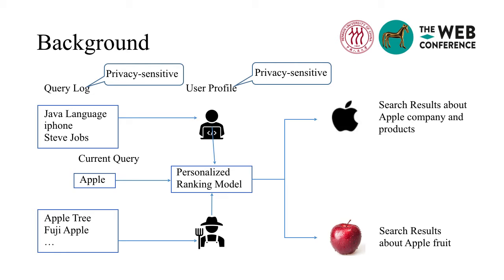This process mainly involves three materialized components: the query log, the created user profile, and the personalized ranking model. With regard to the contained privacy, the most sensitive part is each user's original query log, which might contain much personal information. The second is the user profile, which reflects user interests. The personalized ranking model has no direct access to the original log, hence it contains much less privacy.